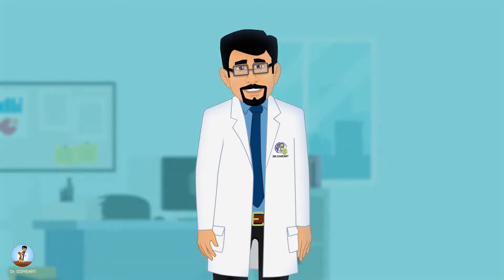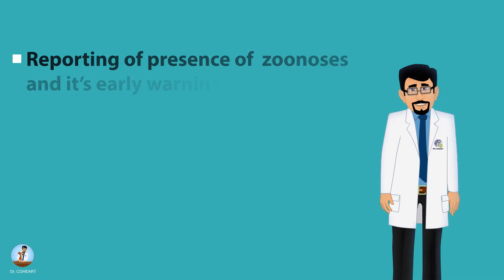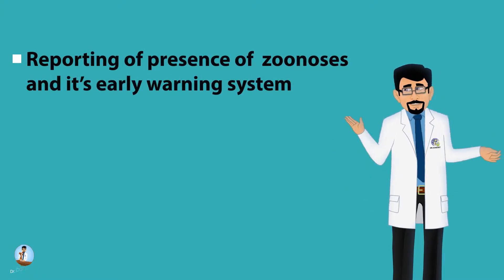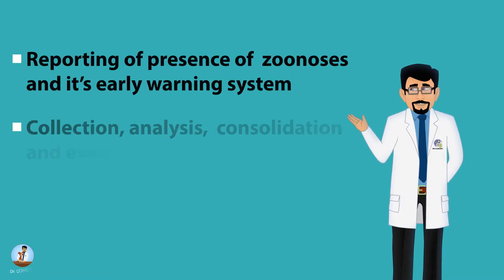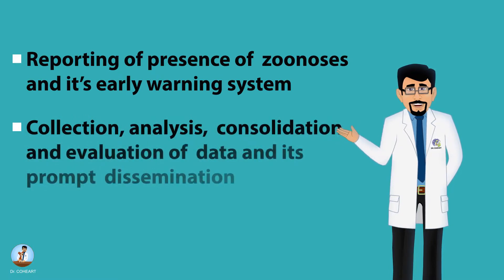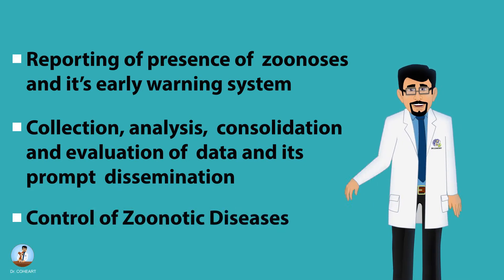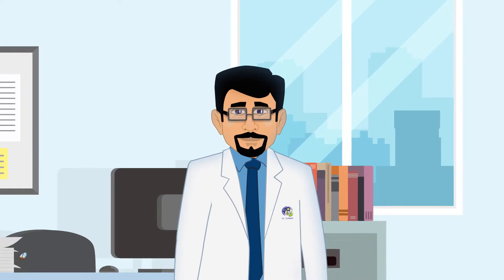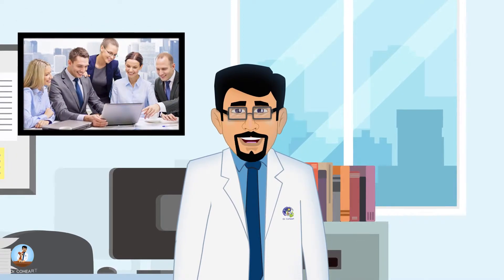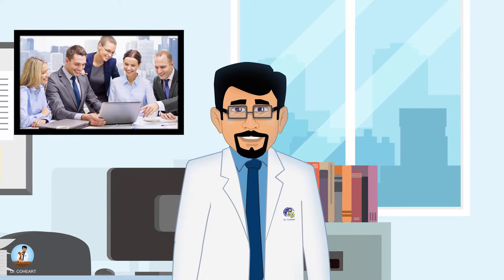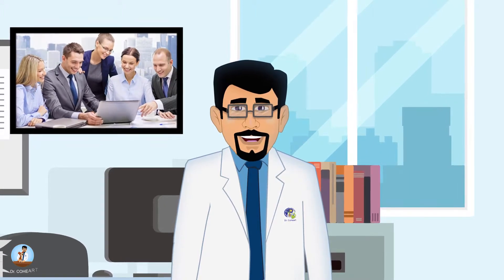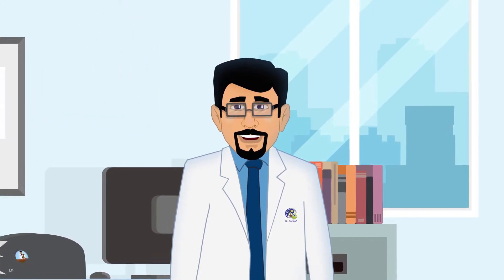VPH is implicated in the reporting of presence of zoonosis and an early warning system, collection, analysis, consolidation, and evaluation of data and its prompt dissemination, and the control of zoonotic diseases. It is clear that the programs for control of zoonosis require the collaboration of experts from a number of different disciplines, and generally the public health veterinarian acts as a link between governmental agencies in which veterinary professional skills are deployed.